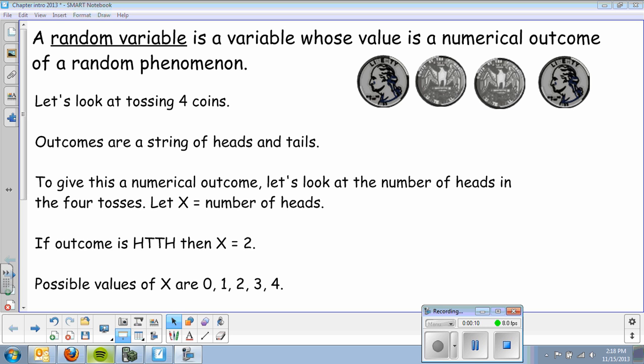In this chapter, we'll begin with talking about what a random variable is. A random variable is a variable whose value is a numerical outcome of a random phenomenon.